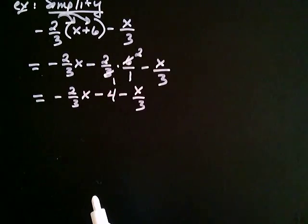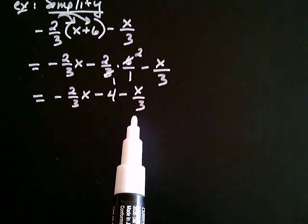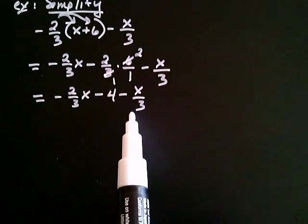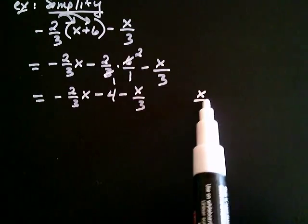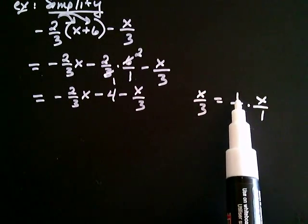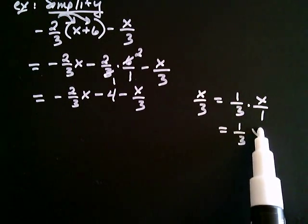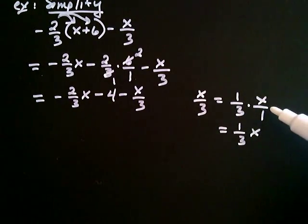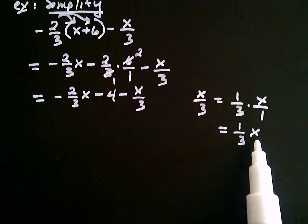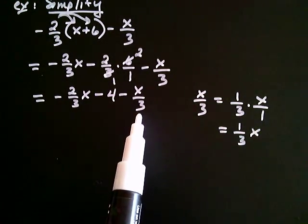At this stage we're going to combine like terms. The like terms are the two x terms. The coefficient for the first term is clearly negative two thirds. For the term x over three — you can always think of x over three as one third times x over one, which equals one third x. The x is actually up in the numerator; it's over one, but nobody really writes that. So replacing x over three with one third x makes the coefficient clear. This gives us negative two thirds x, minus four, minus one third x.